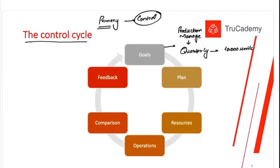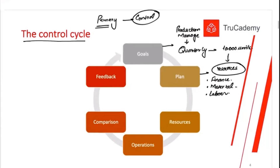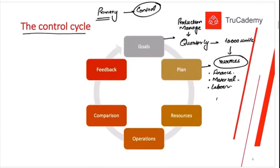After setting the target, we need to plan. We want to produce 10,000 units, so we need resources: finance to buy materials, a consistent supplier, and labor — whether available, part-time, full-time, or on a shift basis. The second stage is planning for the resources based on our target — how we are going to get whatever resources we need.